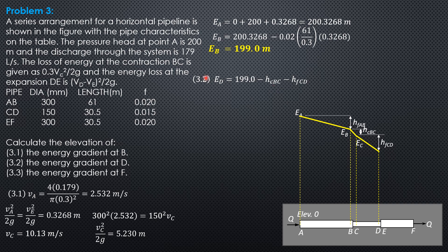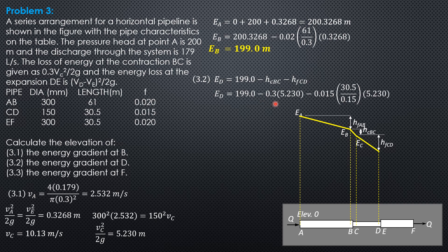Head loss due to contraction in BC is 0.3 times velocity head at C = 0.3 × 5.232. The pipe friction loss in CD is friction factor 0.015 times length 30.5 divided by diameter 0.15, times velocity head at C (5.232 meters). Substituting, the elevation of the energy gradient at D is 181.5 meters.